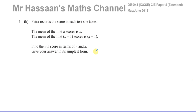In this question, you have some abstract things in terms of x and n, and it's not easy to picture what's going on. So when you have an algebraic question like this, a very good strategy you can use is to try to think of it in terms of real numbers.